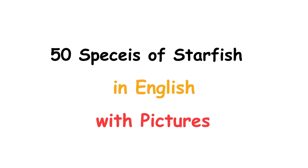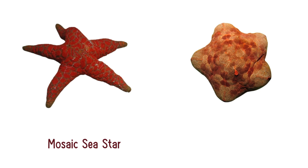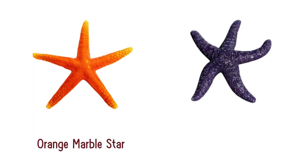50 species of starfish in English with pictures: mosaic sea star, pink cushion starfish, orange marble star, purple sea star.